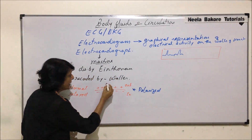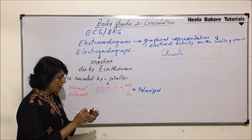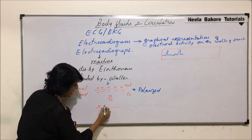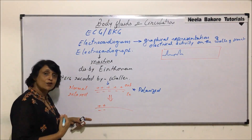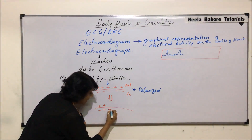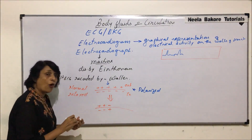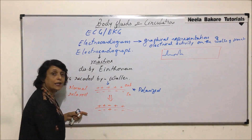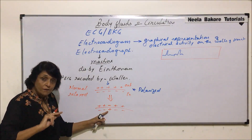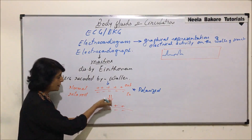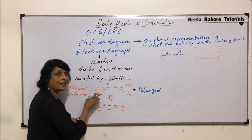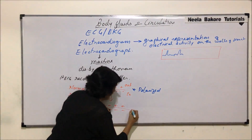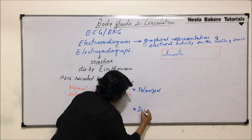As soon as the membrane gets a stimulus, say the stimulus is received at one point — it is electropositive on the outer side and electronegative on the inner side. Now the positive charge is going to move in because of channels which open, and it becomes positive on the inner side and negative on the outer side. The other areas remain the same. Charges have shifted — this condition is termed as depolarization.